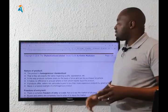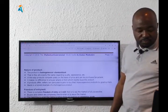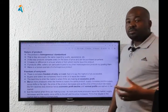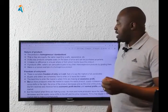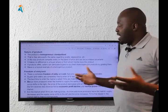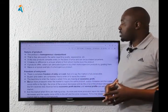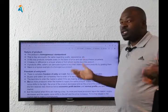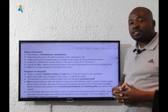The next one is the nature of product. I started with farming and let me give an apple as an example. I would say apple is a homogeneous product or we can say it's a standardized product.